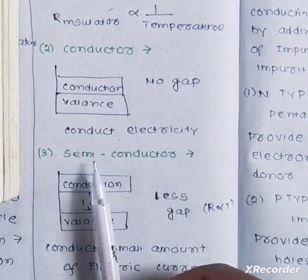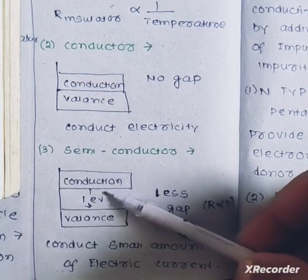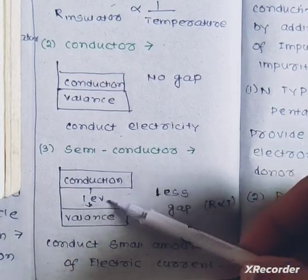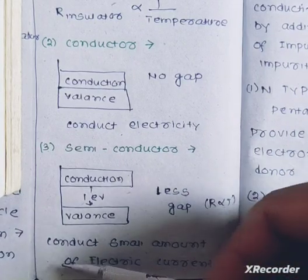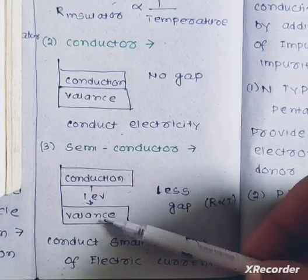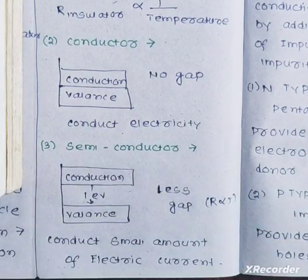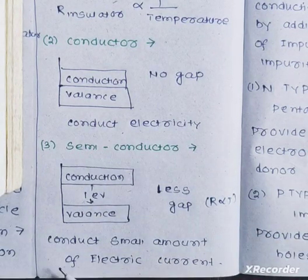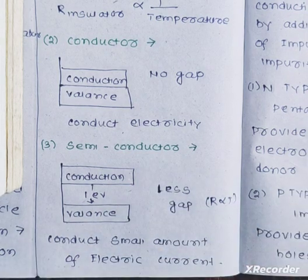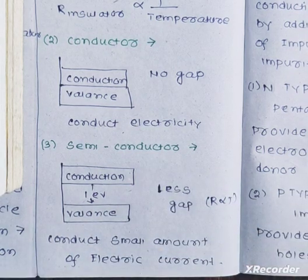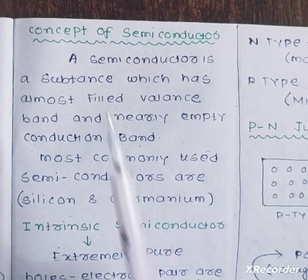The third type of material is the semiconductor. In a semiconductor, the gap from the valence band to the conduction band is small — approximately 1 electron volt. Because this gap is small, with a sufficient electrical supply the electrons can move to the conduction band, allowing a small amount of electric current to flow. Semiconductors fall between insulators and conductors.